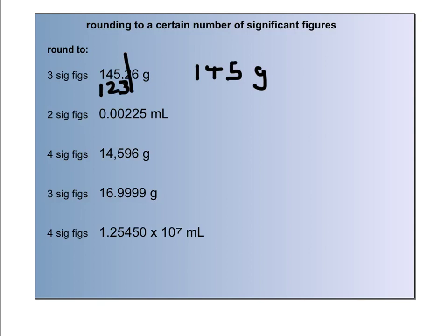The next one we want to be two significant figures. If you look at that measurement as written, it is only three significant figures right now. Remember, those zeros are just placeholders and they don't count as significant figures. So the two will be our first significant figure, and the other two will be our second significant figure, and that's where we cut it. We're going to round that two up to a three because there is a five next to it.